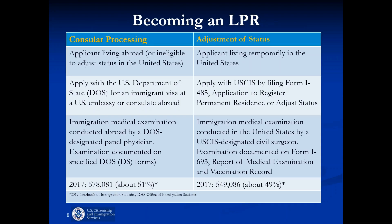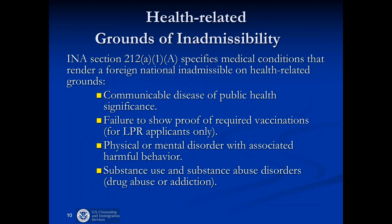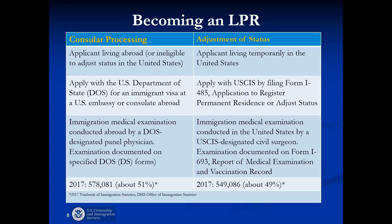This chart illustrates the permanent residence process for people outside the United States and those already inside the U.S. adjusting their status. Civil surgeons are already in the U.S., performing what we call civil surgeon functions, while overseas they are called panel physicians but perform the same functions. It's almost 50-50 between people applying for immigrant visas from abroad versus those who adjust status inside the United States.